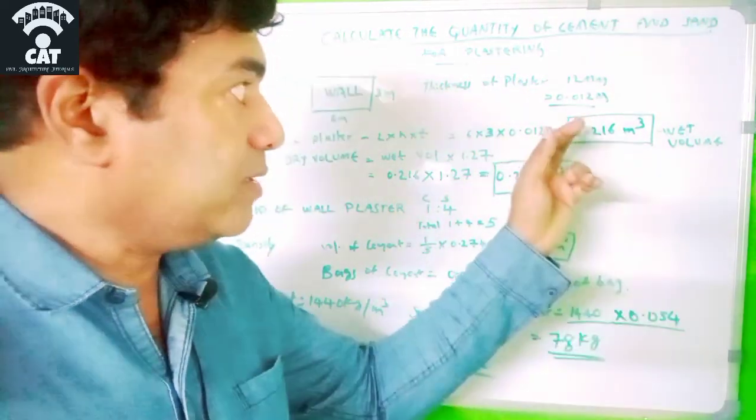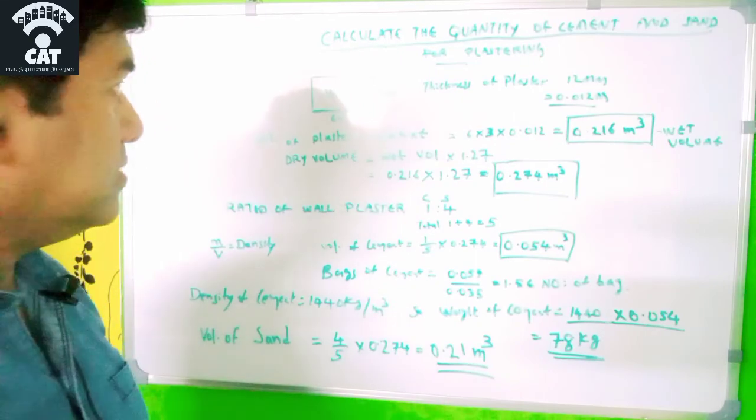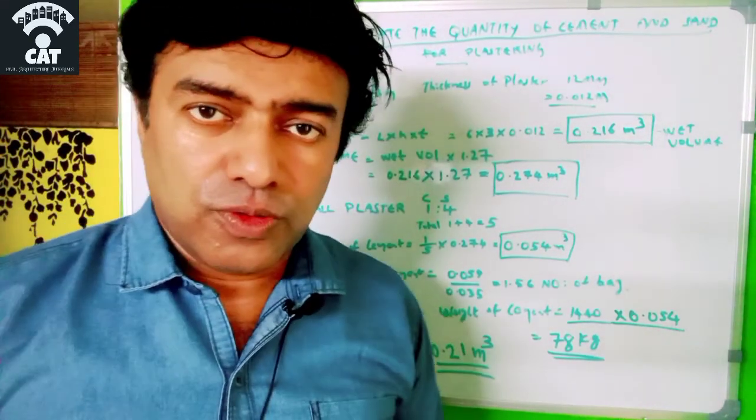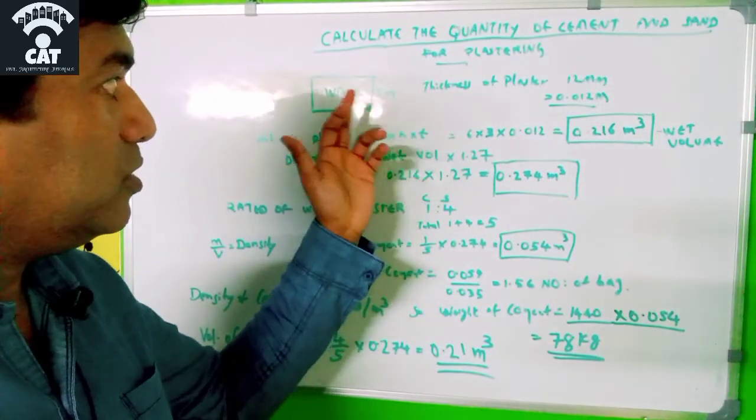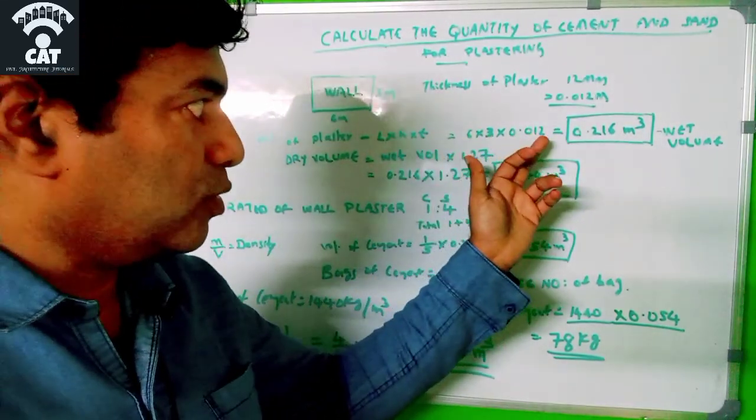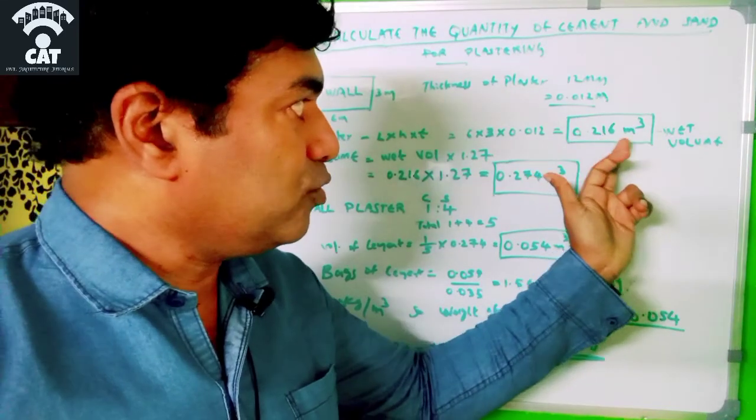Now we have to know the volume of plaster. Volume of plaster is L × H × thickness, that is 6 × 3 × 0.012, which comes to 0.216 cubic meters.